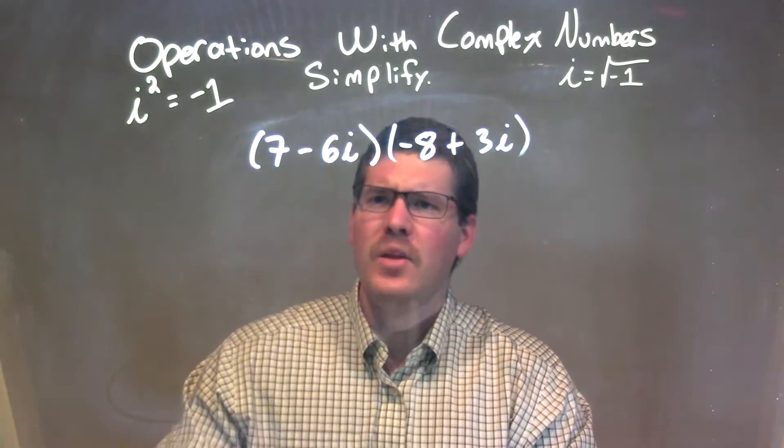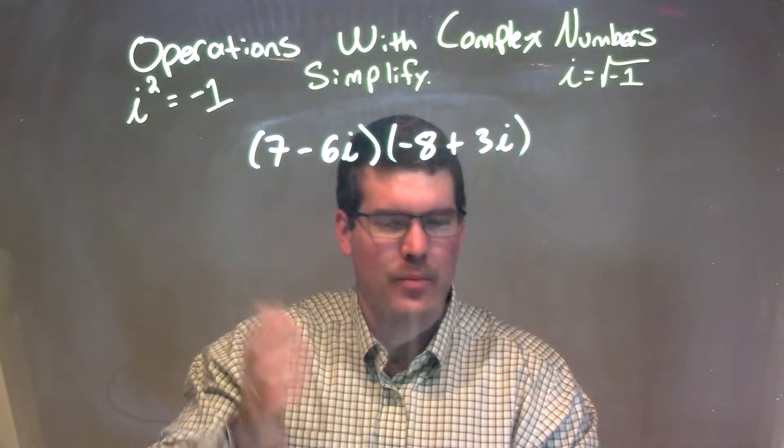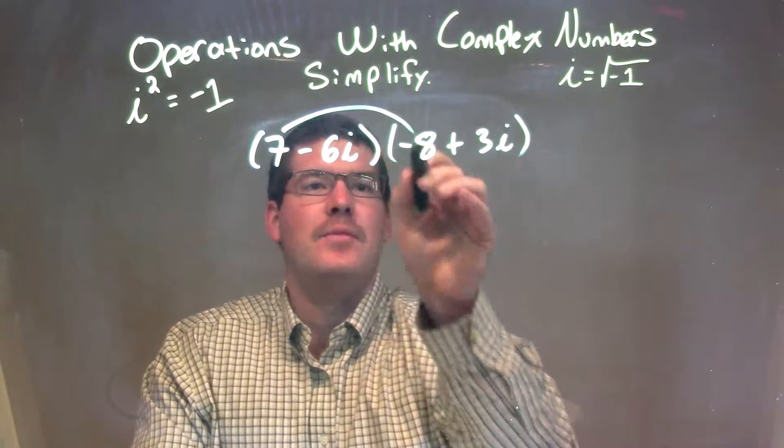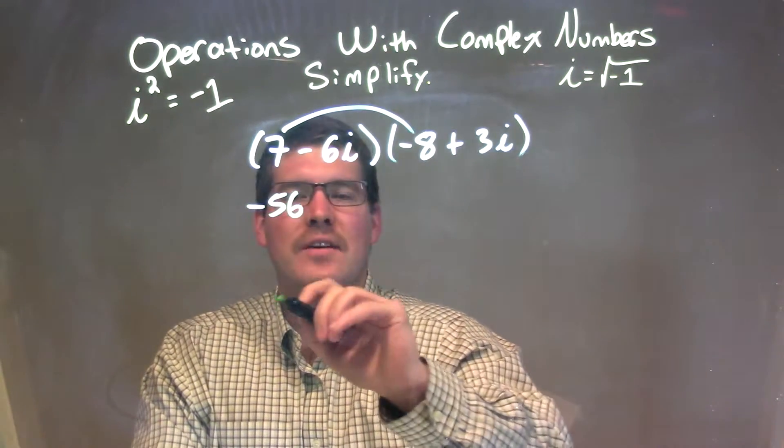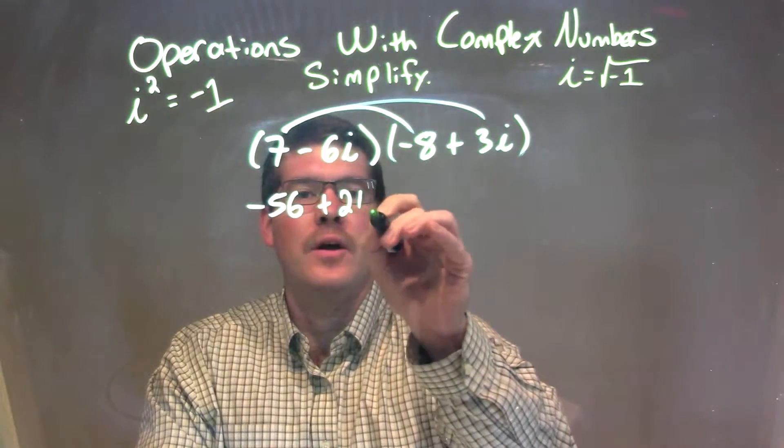What I want to do is multiply all parts of my first parenthesis times all parts of my second parenthesis. 7 times negative 8 is negative 56. 7 times 3i is positive 21i.